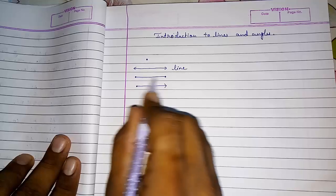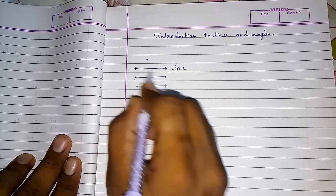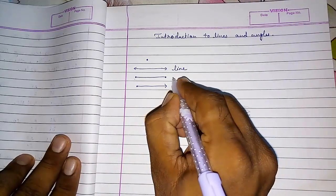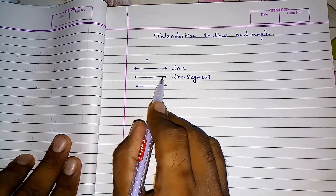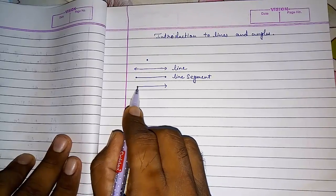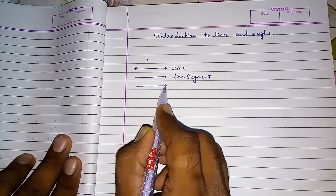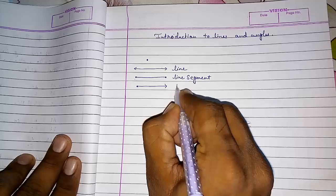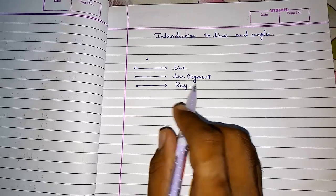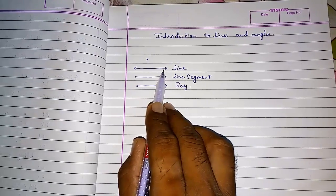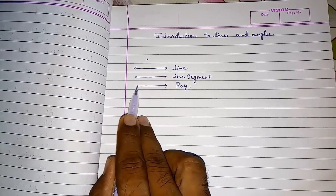When two end points are placed on a line, that part is called a line segment. We can measure a line segment. A ray is drawn from a fixed point and goes on and on in one direction. So: we cannot measure a line, we can measure a line segment, and a ray has one fixed point.